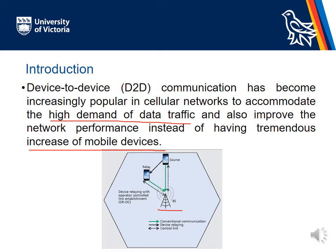In D2D communication, two devices — for example the two mobile devices you can see in this figure — can communicate with each other without taking much help from the underlying network infrastructure. The base station is only responsible for the initial connection establishment, such as authentication and location detection. Afterwards, the two devices can directly communicate and send data without routing it through the base station.